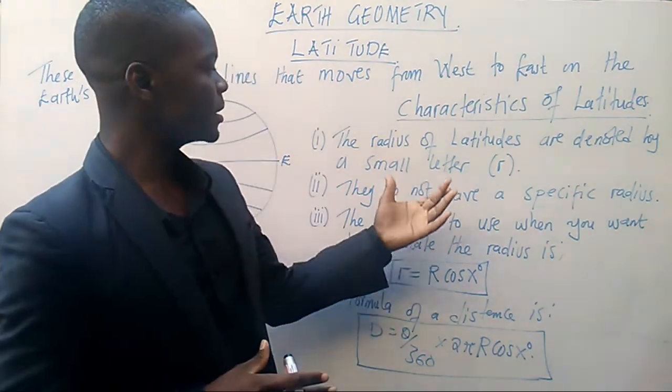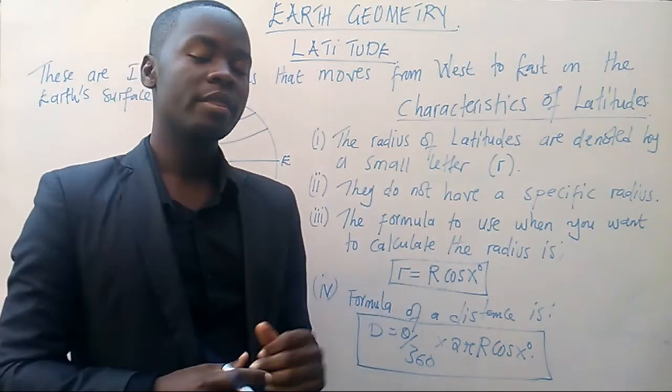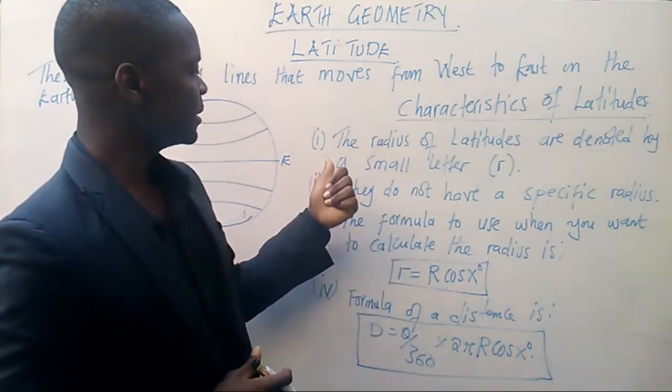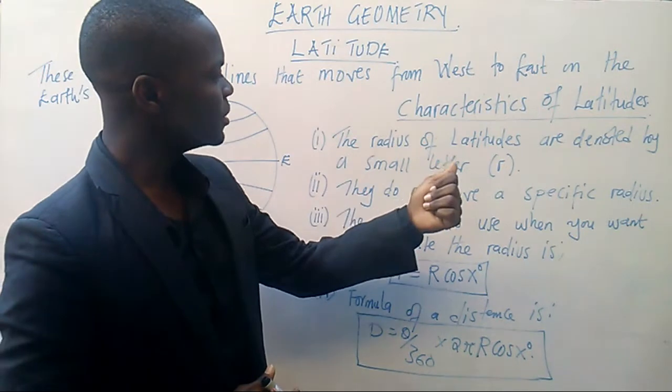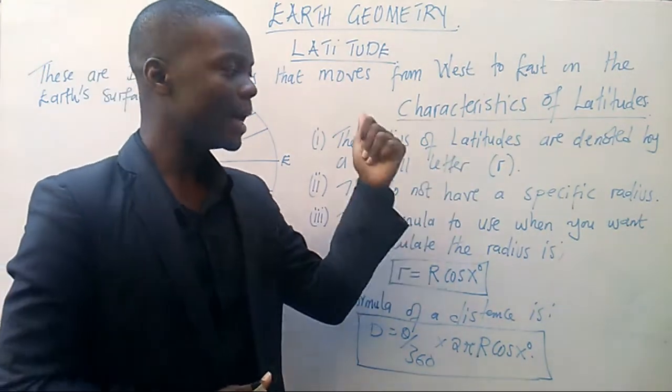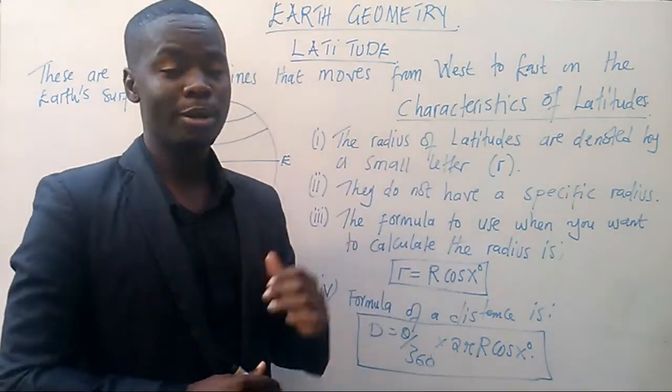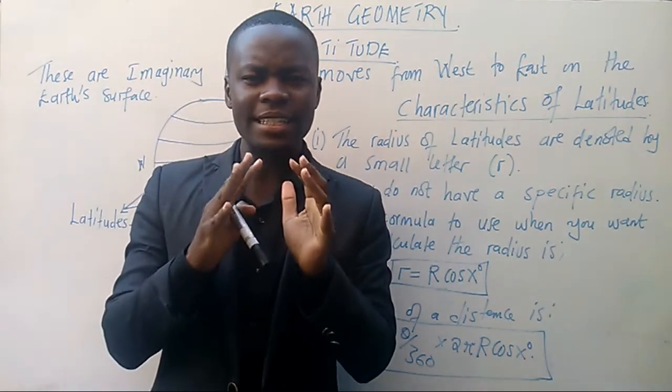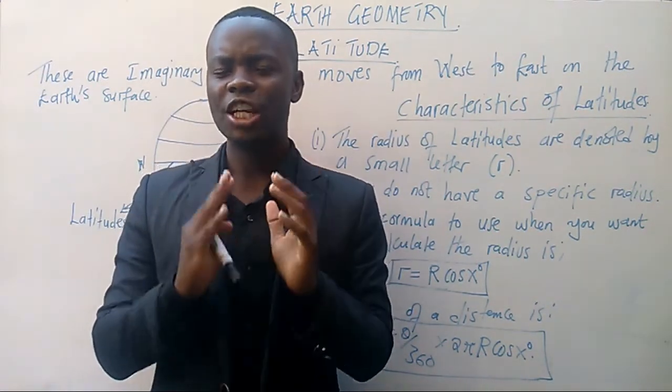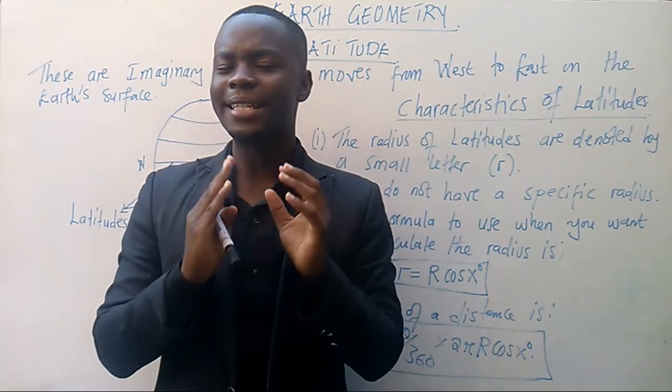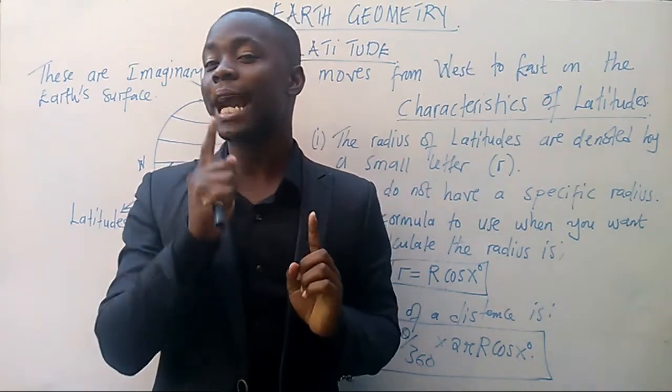Now, of course, the characteristics which I have listed here, there are just four. The first characteristic is saying the radius of latitudes are denoted by a small letter r. This is very much true. As far as latitudes are concerned, latitudes are denoted by a small letter r, not a capital letter r.